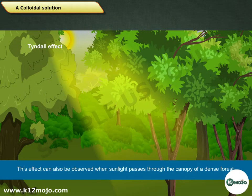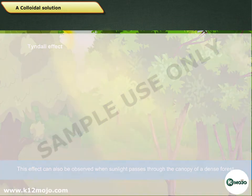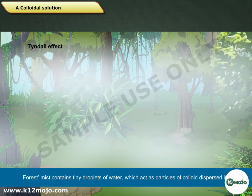This effect can also be observed when sunlight passes through the canopy of a dense forest. Forest mist contains tiny droplets of water, which act as the particles of colloid dispersed in air.